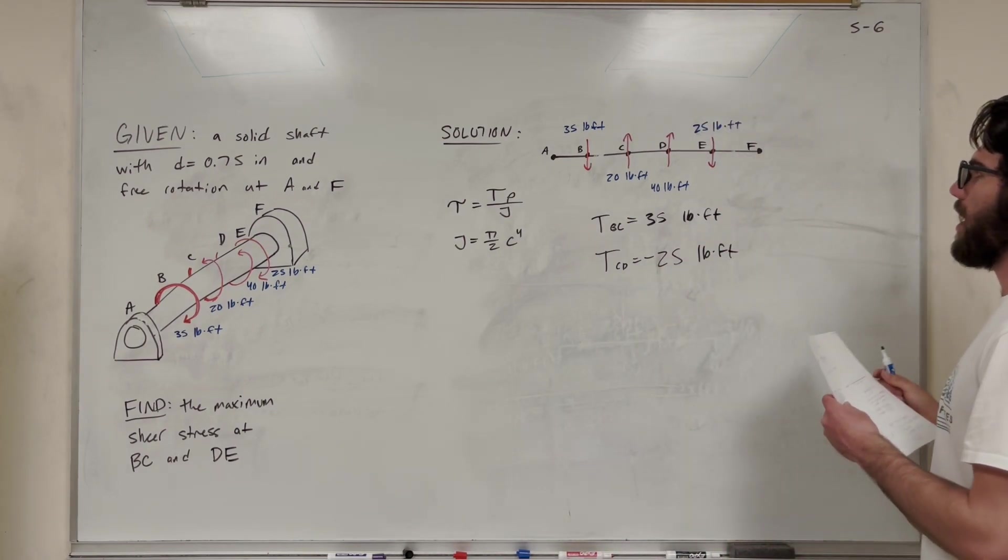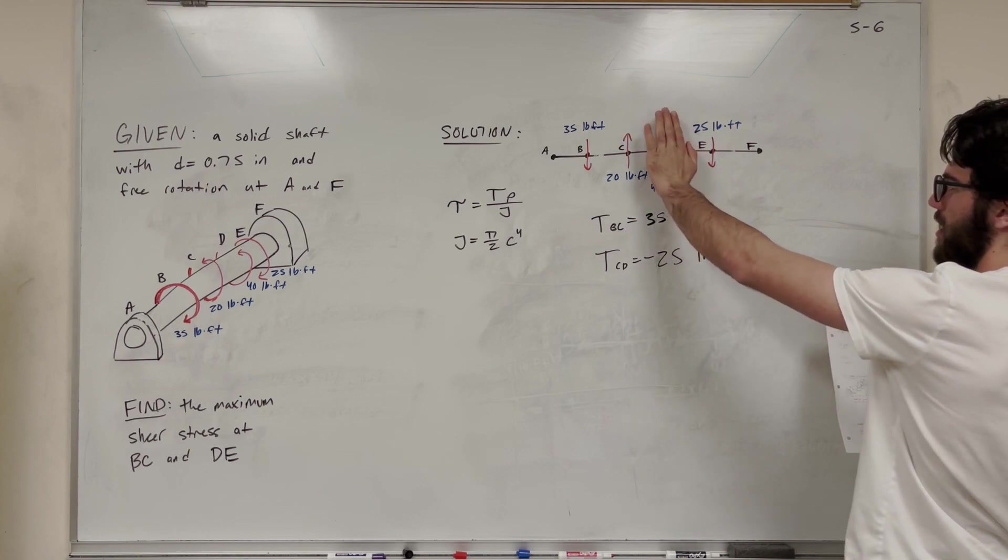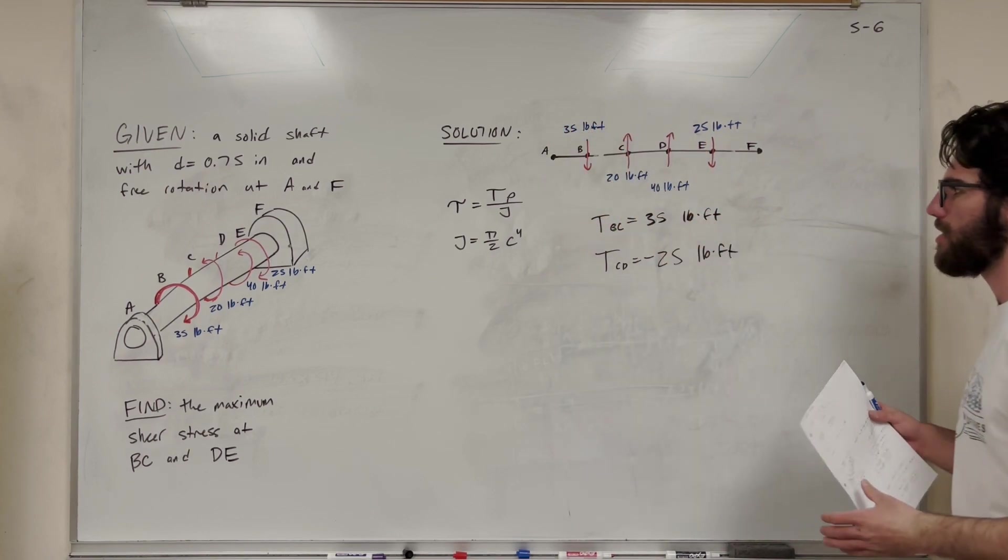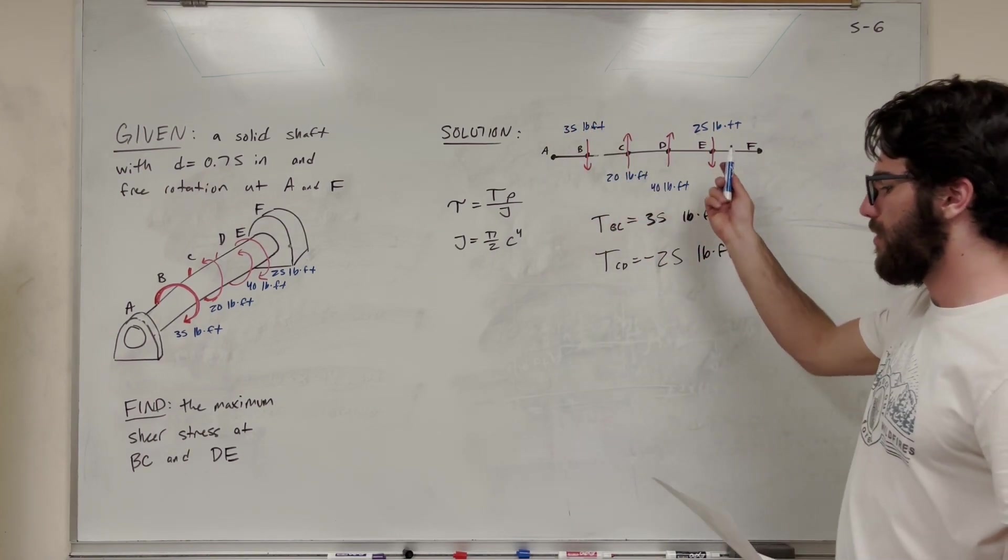But you can also go the other way, right? You could start here, you get zero and then you get 25 for DE. Same thing. Go down, you would get the same numbers. That's as long as these forces cancel each other out.